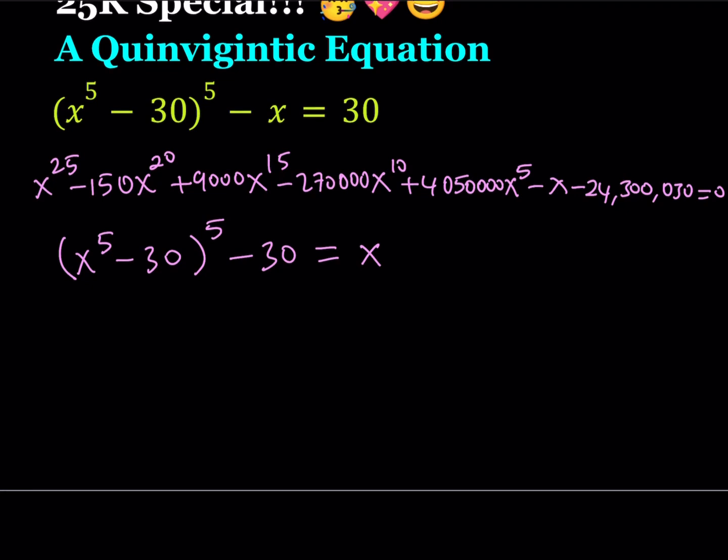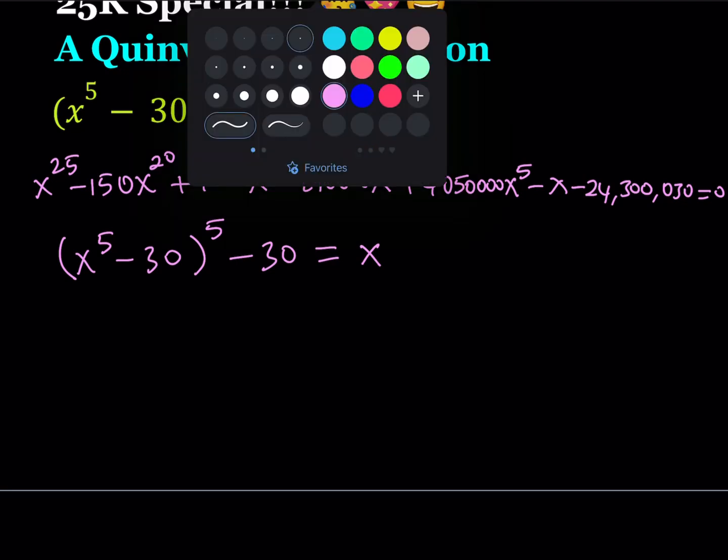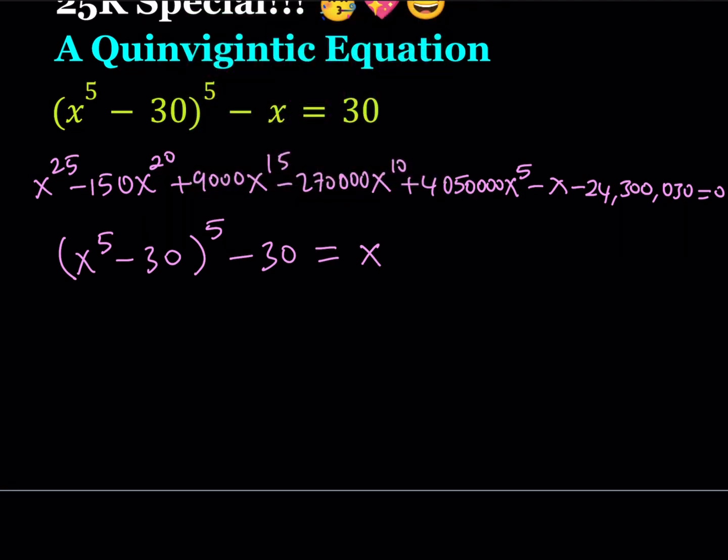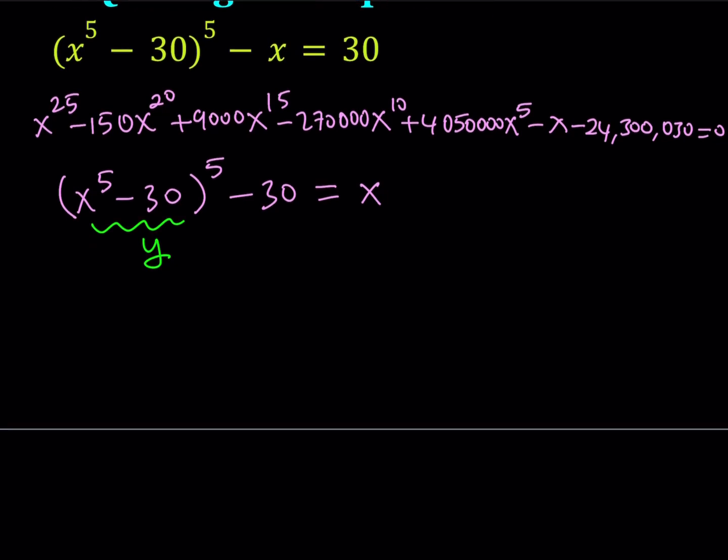Now, what is so good about writing it this way? Well, notice that now I'm getting something repetitive here. So I'm going to be using substitution. I'll call this y and you hopefully know why I'm doing that. This is going to give me y^5 - 30 = x. But not only that, I'm also getting something else from here. Notice that what did I call y? I called x^5 - 30. So I can also say that x^5 - 30 = y.